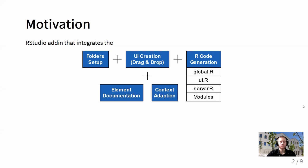Hello and welcome. My name is Leon Binder. I am from the TG Grafenau, part of the Teckendorf Institute of Technology in Bavaria, Germany. Today I can proudly present the Shiny Quick Starter, which is an RStudio add-in for building Shiny apps by drag and drop. This add-in automates the folder setup, lets you create the UI with drag and drop, shows documentation for elements used, lets you adapt elements like changing input IDs and labels, and in the end you can export your code and immediately start implementing your actual program logic.